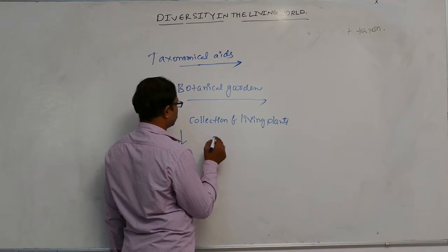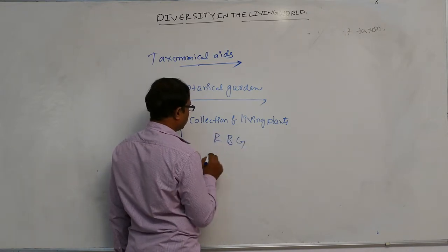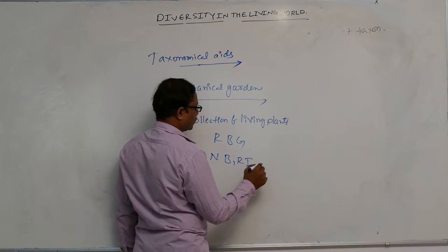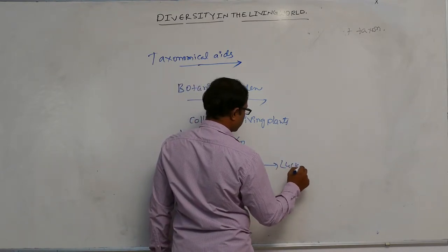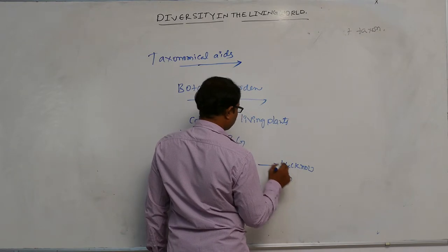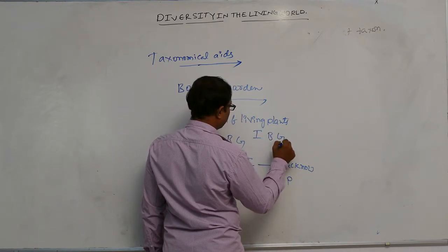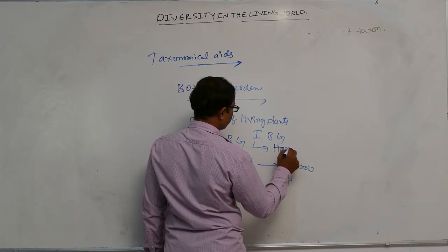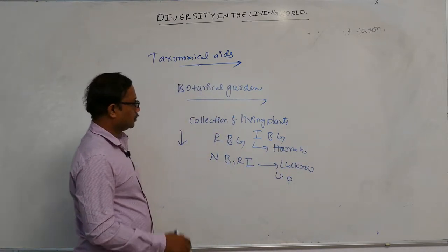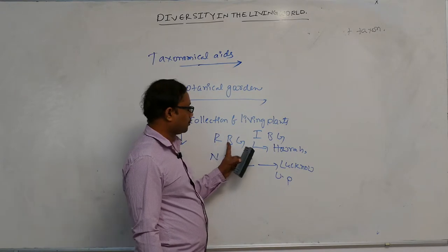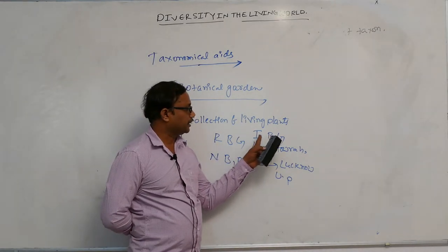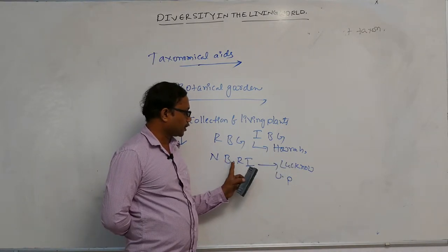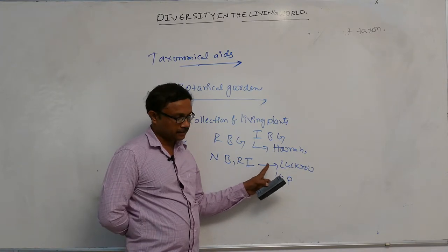The largest botanical garden is the RBG, Royal Botanical Garden. After that, NBRI — National Botanical Research Institute — is present in Lucknow, Uttar Pradesh. IBG, Indian Botanical Garden, is present in Howrah, Kolkata.